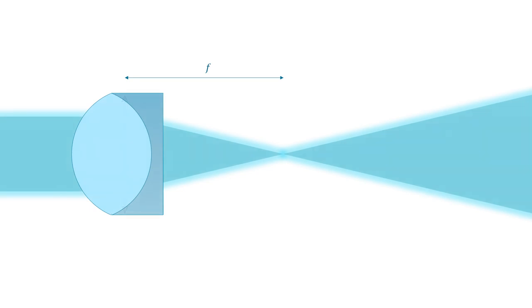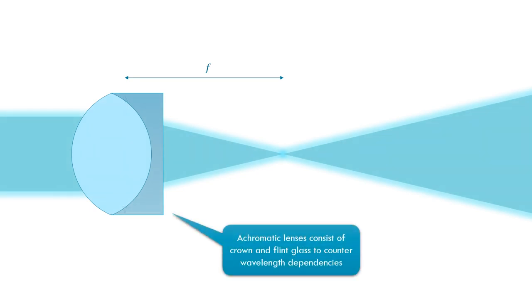First of all, make sure the lens is the right way around. That makes a big difference. As a rule of thumb, the more curved surface points towards infinity. Infinity is where the beam is collimated.